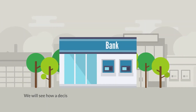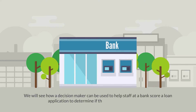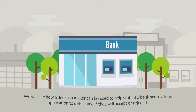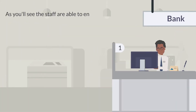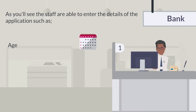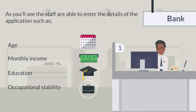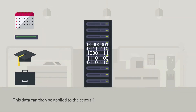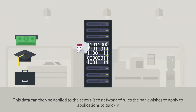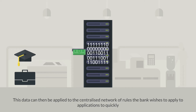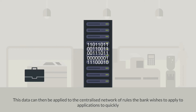We will see how a decision maker can be used to help staff at a bank score a loan application to determine if they will accept or reject it. The staff are able to enter the details of the application, such as age, monthly income, education, and occupational stability. This data can then be applied to the centralized network of rules the bank wishes to apply to all applications.